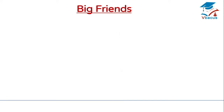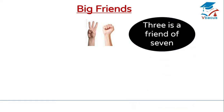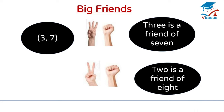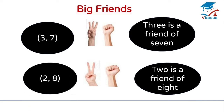Let us see next. How many fingers are closed? 7. How many fingers are open? 3. So 3 is a friend of 7. We can write it as 3, 7. How many fingers are closed? 8. How many fingers are open? 2. So 2 is a friend of 8. We can write it as 2, 8.